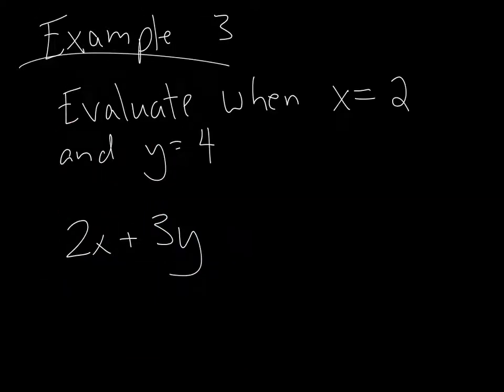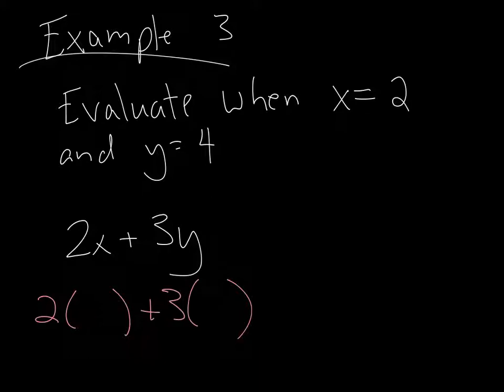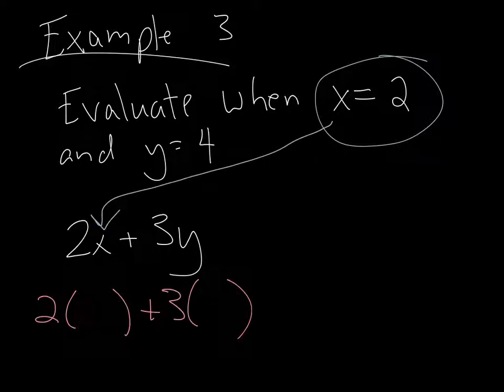Example 3. Now we're going to evaluate some expressions and use the order of operations in that. So in this example, we're going to evaluate this expression when x is 2 and y is 4. In this expression, we have two variables. We have an x. We have a y. And we're told values for each one of these. So the way that I start to do these when I have to evaluate them is I'm going to rewrite the expression, except wherever there was a value that I know a number for, I'm going to put empty parentheses. x is equal to 2. That means x is the same as 2. So I can put where x was, I can put 2. And it says that y is equal to 4. So where it says y, I can write 4. Equals means the same as.